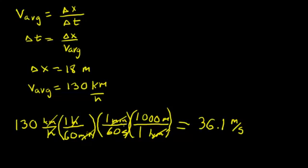Now we are ready to go back to our formula that we derived for the time taken. So I have delta t equals the distance traveled by the ball, which is 18 meters, divided by the velocity, which is in meters per second, 36.1.